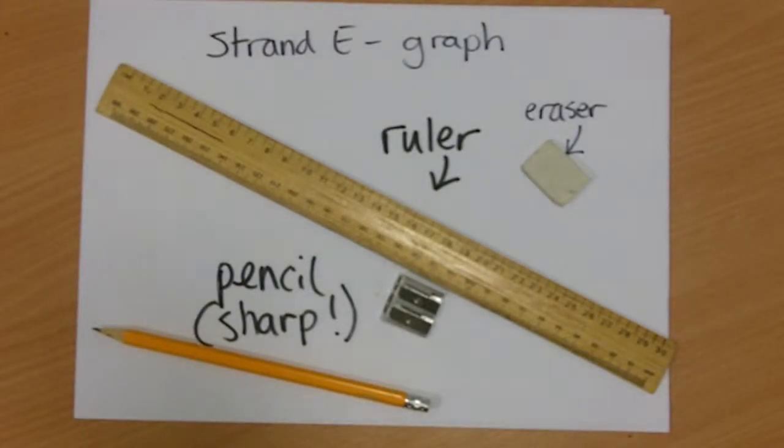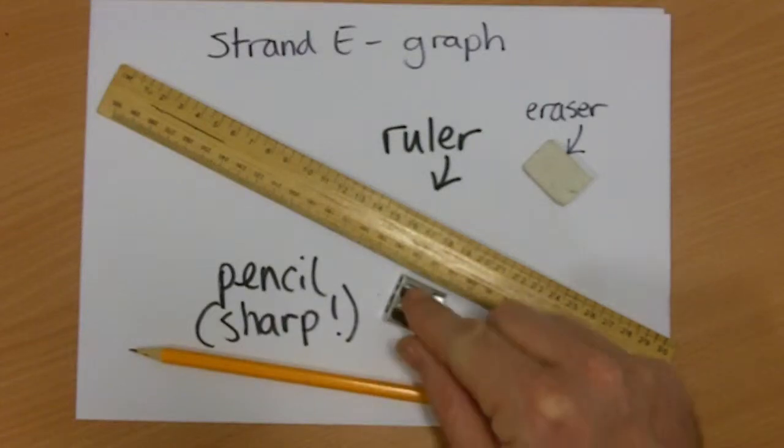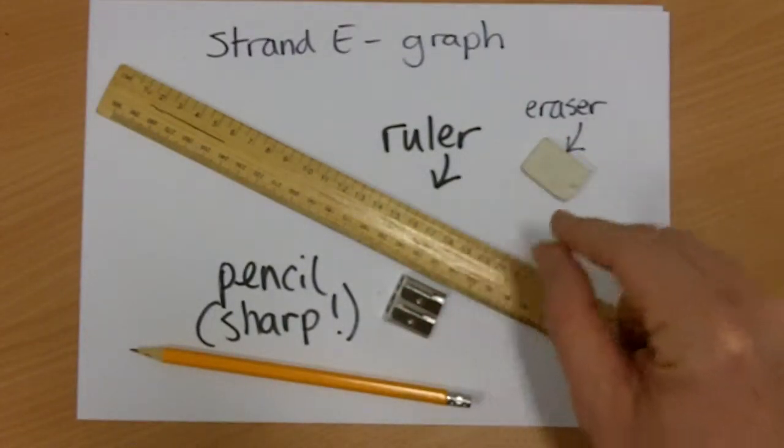Hi, welcome to the OCR 21st Century Science videos. These videos are all aimed at improving controlled assessments, specifically in this case for strand E of the data analysis component. Now these are all the bits of equipment that you should have with you when you're completing your data analysis. It's really important for graphing that you have a really sharp pencil, so make sure you get a sharpener to keep it sharp, and a rubber and a ruler.